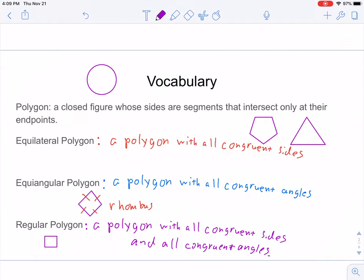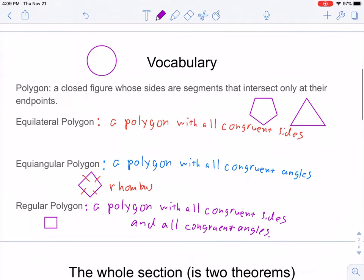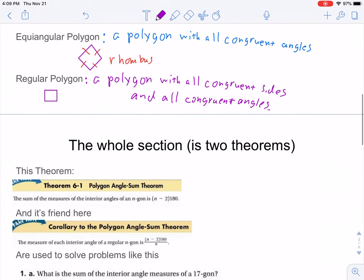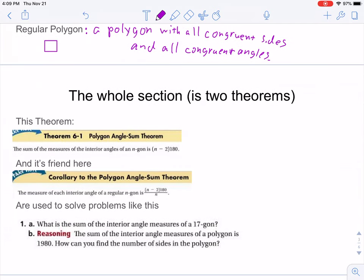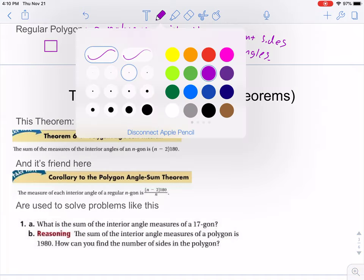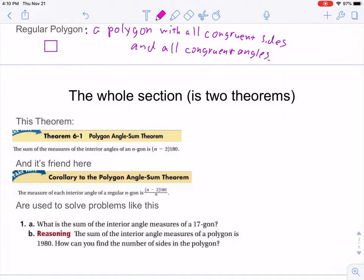But for today, we're mostly interested in the sum of all of the interior angles of a polygon. Now, there's one shape that we definitely already know the sum of all of its interior angles. And that's the triangle. And that's, of course, 180 degrees.